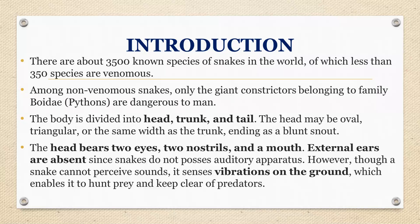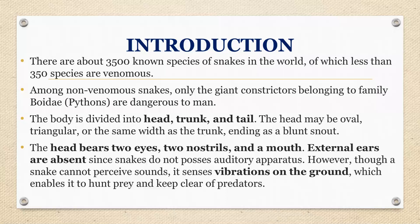Among non-venomous snakes, the dangerous one is the python. The snake is divided into head, trunk, and tail. The head may be triangular or the same width as the trunk, ending as a blunt snout. The snake has two nostrils and a mouth, but no external ears — it can only perceive vibration on the ground, and with that vibration it catches its prey.